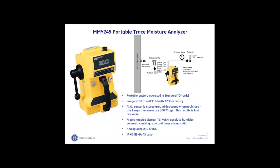Our portables are used for spot checking. The first one is the MMY245 portable analyzer, which has a sensor built into it and an arm that is essentially a valve. When the sensor is not in use, it's surrounded by desiccant which keeps the sensor dry. By pre-drying the sensor, we get a faster response to trace levels because rather than starting from a wet point, the sensor is already pre-dried to approximately negative 60°C dew point or about 10 parts per million. This unit operates on standard D-cell batteries, so you can use it in an industrial plant without needing a special power supply.